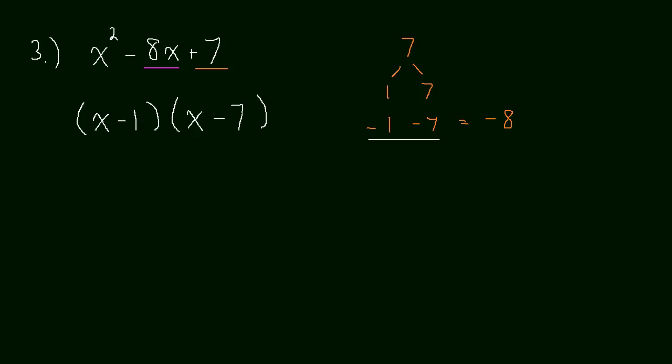And if you don't believe me, then just multiply these back through and you'll see. If we multiply this back through, x times x will be x squared, so that takes care of the first term. Then we have x times negative 7, that's minus 7x. And then we have negative 1 times x, that's minus x. And then we have negative 1 times negative 7, and that is positive 7. And when we simplify this, we just get x squared minus 8x plus 7.